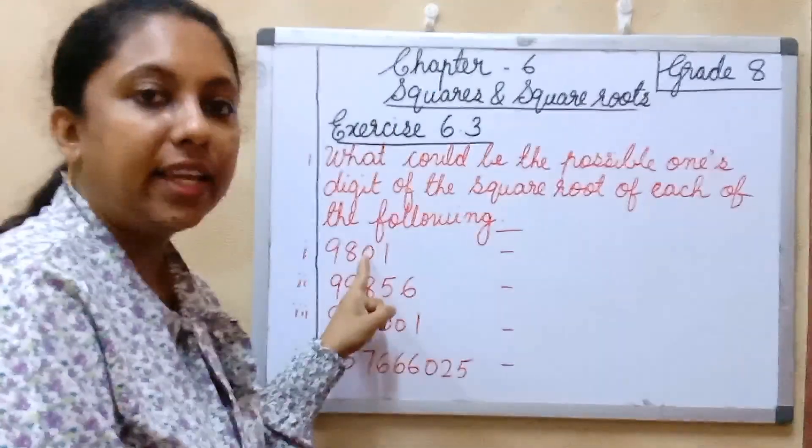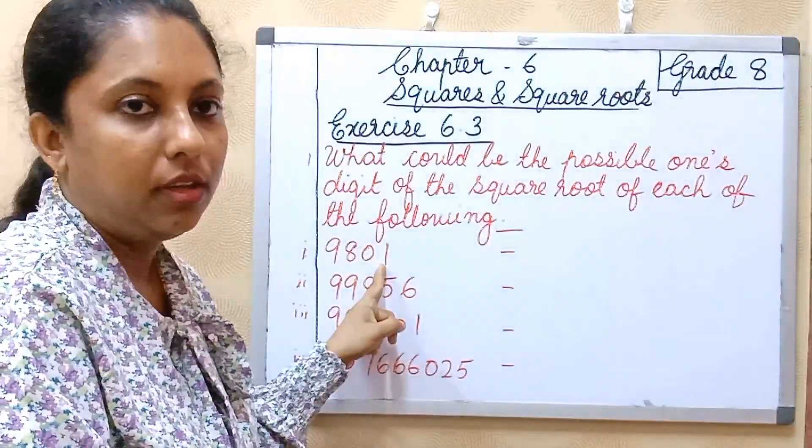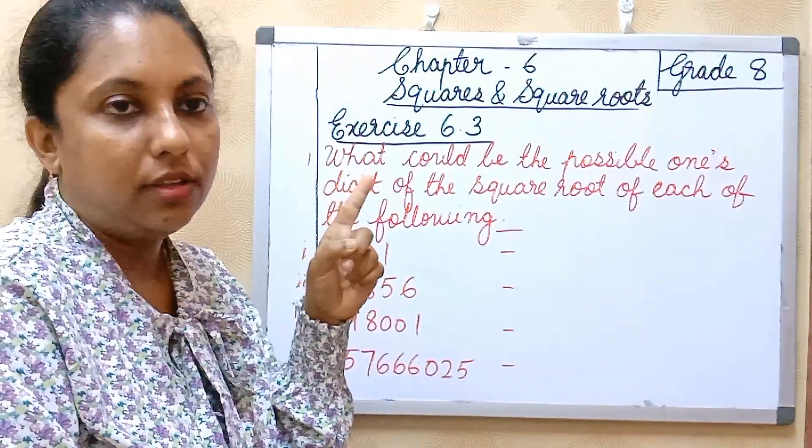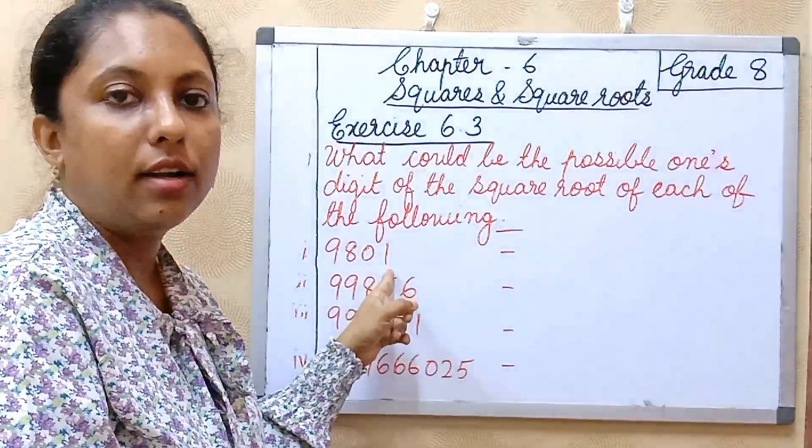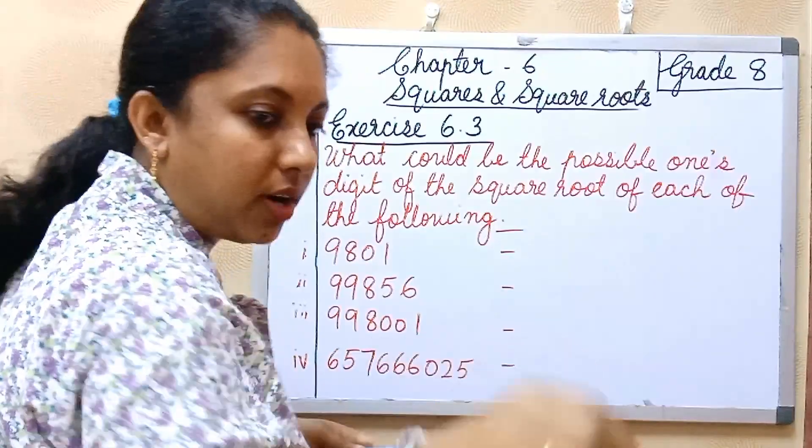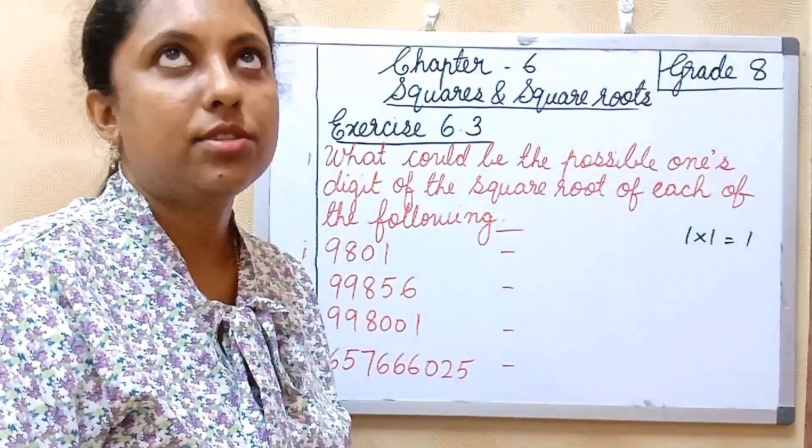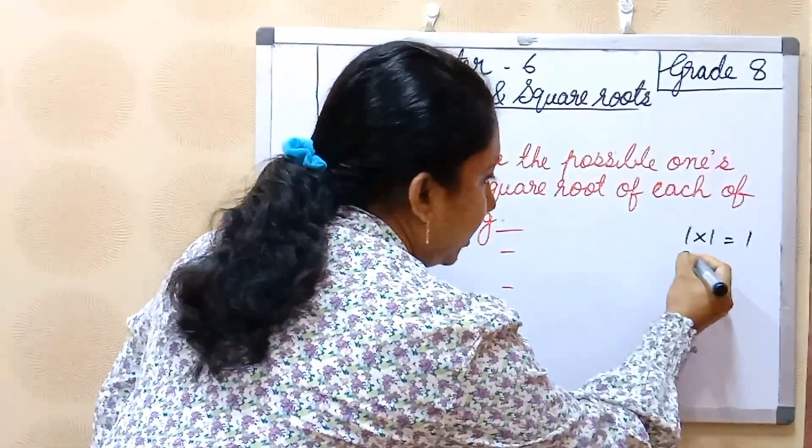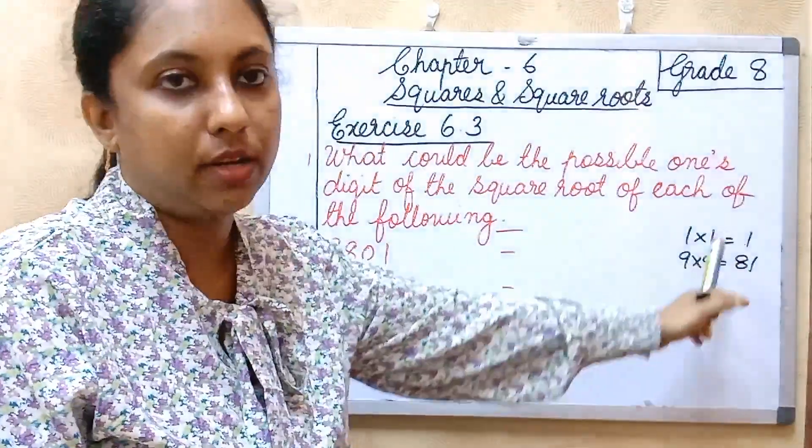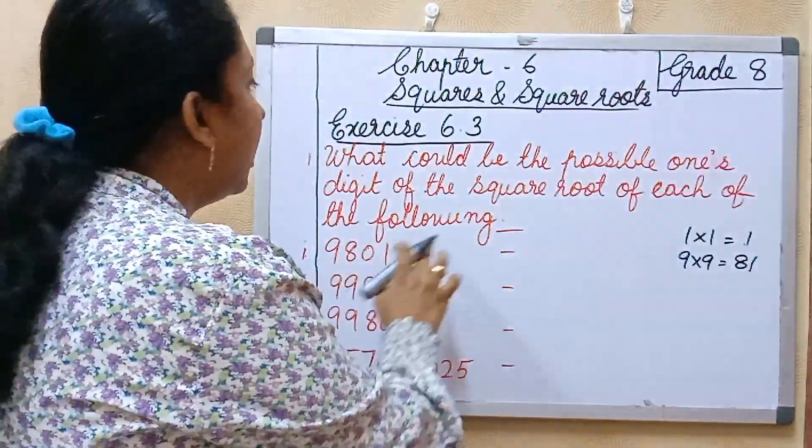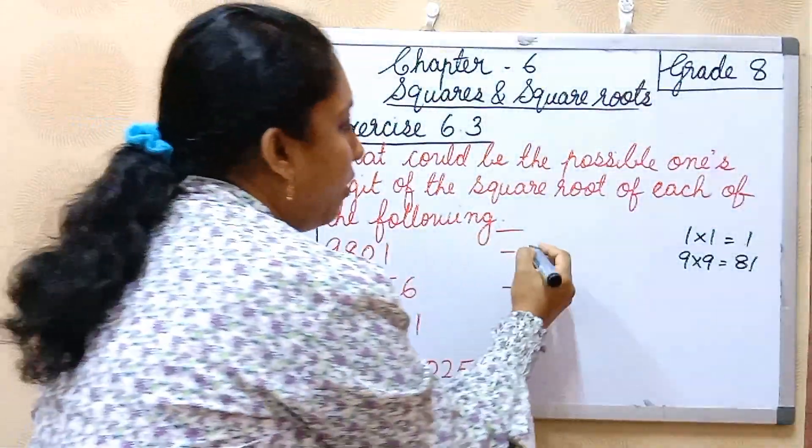You should check the ending digit of each number. See here, ending digit is 1. Then you should think which of the numbers we are multiplying to get 1. That is 1 into 1 is equal to 1. Then next you want is 9 into 9 is equal to 81, so 1 digit here 1 and here also 1 only. Two numbers, 1 and 9.